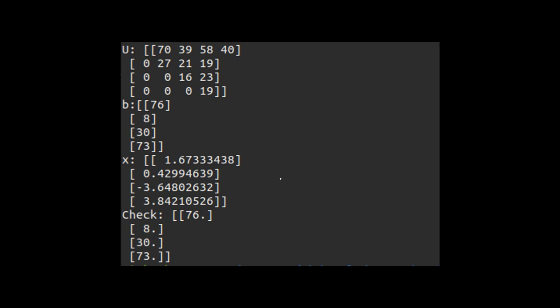Here you can see our upper triangular matrix right here, our randomly generated B vector. And here is our solution. Okay. And then you can see in our check that everything works out. We get 76, 76, 8, 8, 30, 30, 73, 73. So our function works when inputting this random 4x4 A matrix or upper triangular matrix.